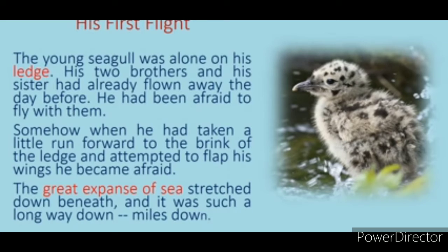The young seagull was alone on his ledge. His two brothers and sister had already flown away the day before. He had been afraid to fly with them. This story is about a young seagull who lives with his parents, two brothers, and a sister, where they live under the ledge of a rock on the edge of a sea.